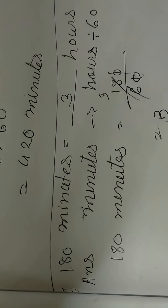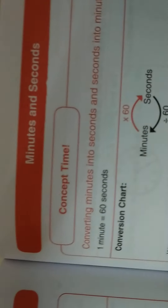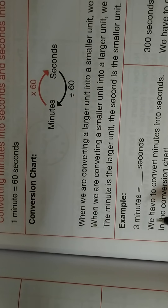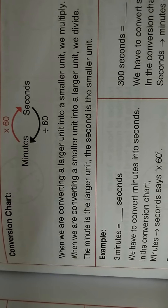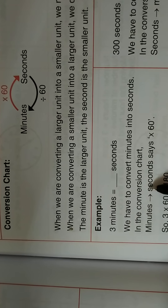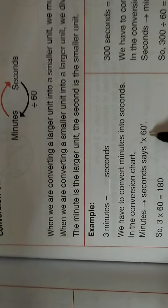Okay students, I hope your work is complete. Now we will start the next worksheet — worksheet number 18, minutes and seconds. We will learn about converting minutes into seconds and seconds into minutes. So, one minute is equal to 60 seconds. For example: 3 minutes is equal to how many seconds? We have to convert minutes into seconds.